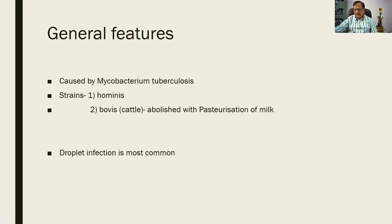The strains are hominis and bovis. Hominis is a strain that affects man and bovis affects cattle. Bovis has been almost abolished with the pasteurization of milk — a process by which milk is heated to a very high temperature and cooled abruptly so that the organism cannot withstand the extremes of temperature. Hominis is more common nowadays, and the mode of infection is droplet infection.